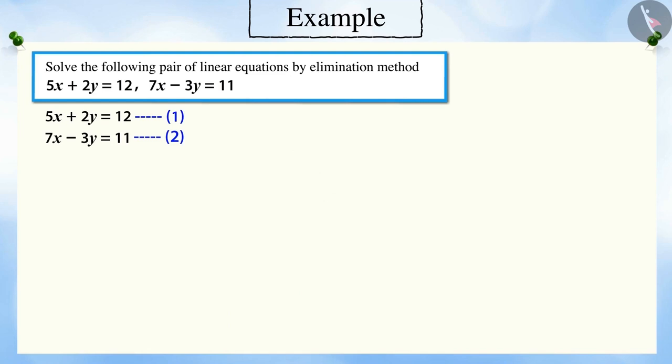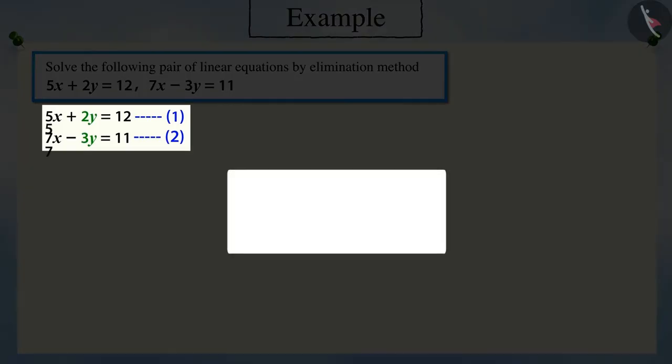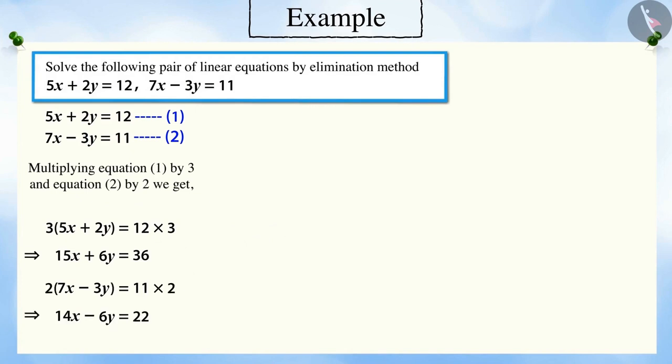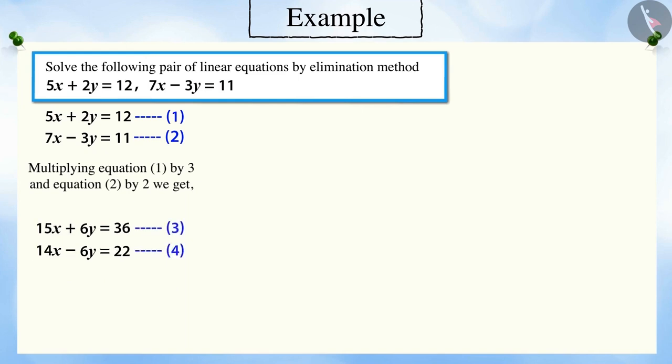After looking at the pair of linear equations, you can tell that it is easier to make y equal as its coefficients are smaller as compared to that of x. To make the coefficient of the variable y equal, we need to multiply equation 1 by 3 and equation 2 by 2. After which, we get equations 3 and 4.